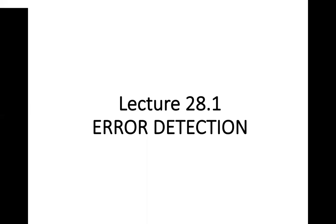Welcome to yet another session on computer networks. In the previous two lectures, we started the discussion on the data link layer, covering its design issues and services provided to the network layer. Yesterday we discussed the concept of framing and the types of framing methods. Today we'll start with the very important concept of the data link layer: error detection.